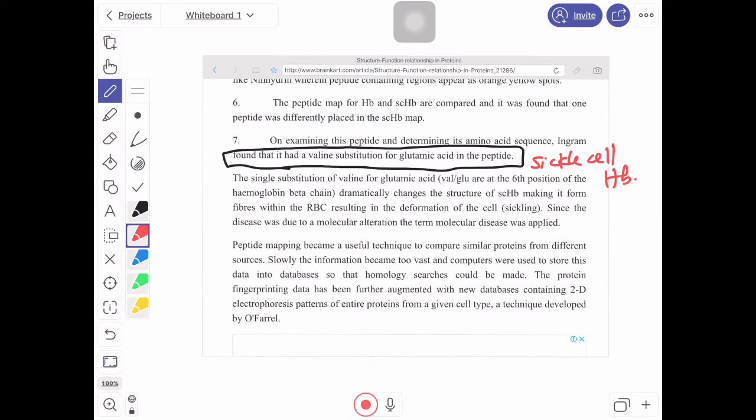On that fragment, all other amino acids were same, but only one change, that is valine in place of glutamic acid. That means valine in the sickle cell and glutamic acid in normal.